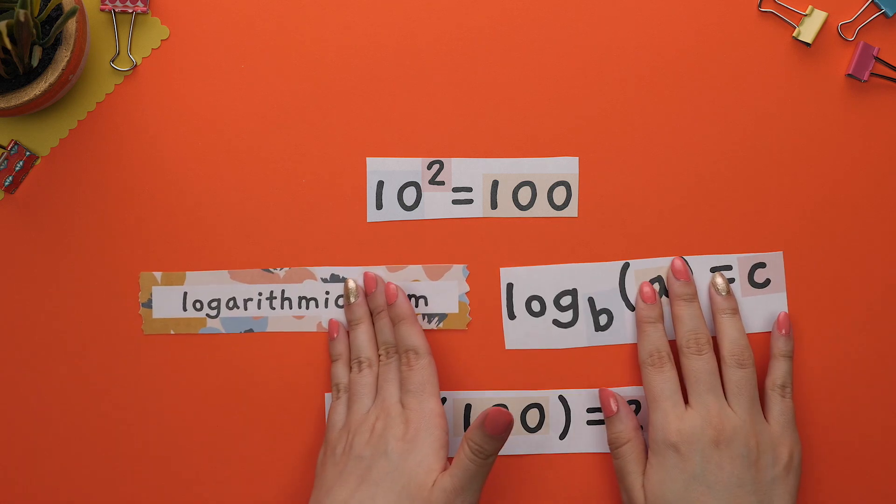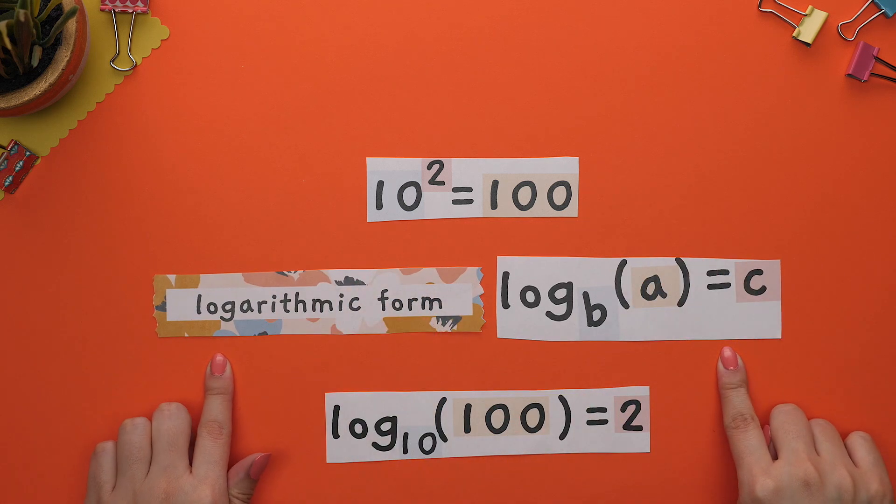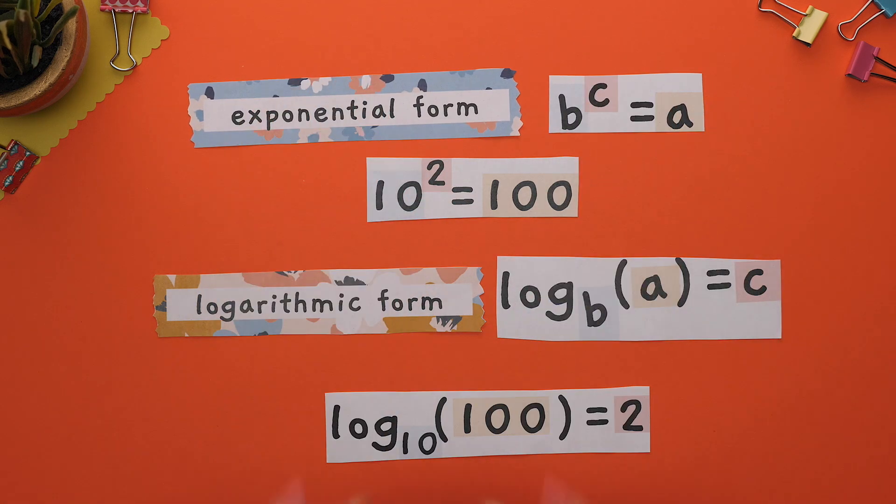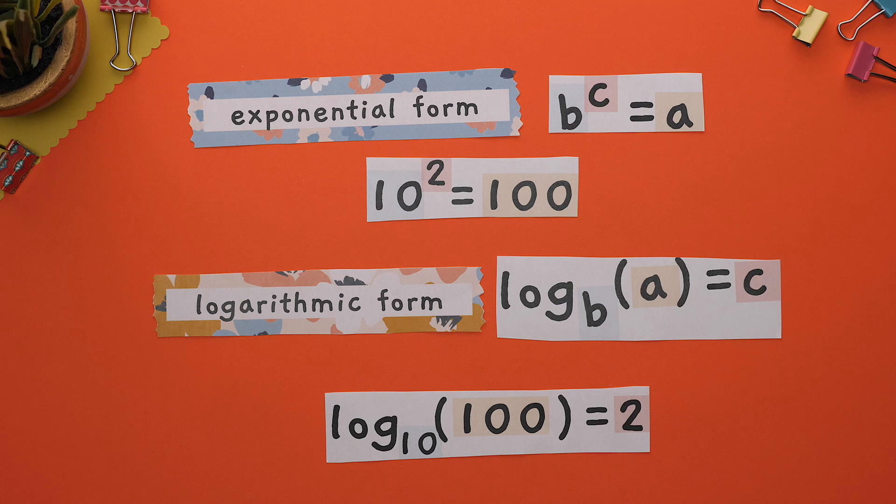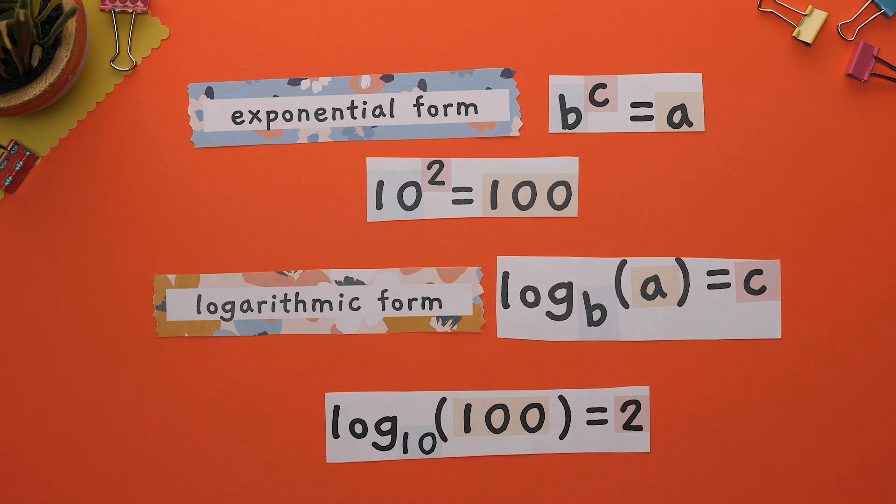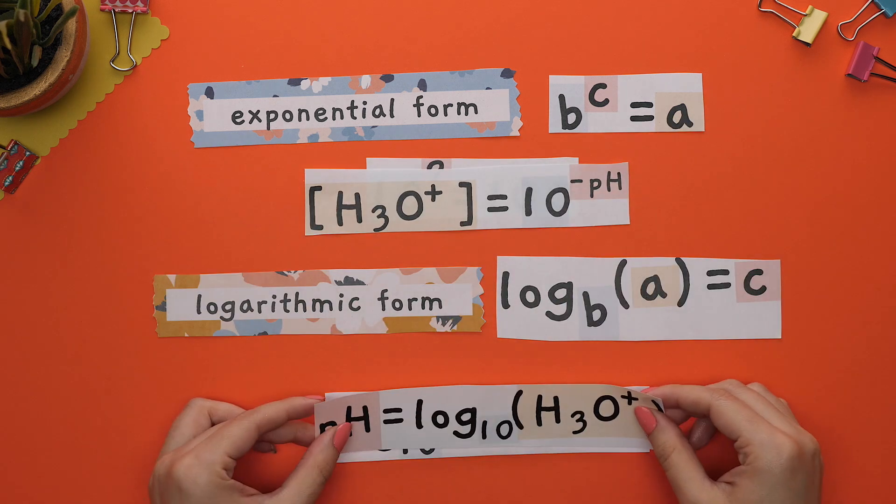This is the generic form of a log called logarithmic form, and the generic form of its exponent is called exponential form. You will need to know how to switch back and forth from logarithmic form to exponential form and vice versa in a specific way in Chemistry.